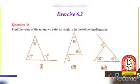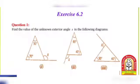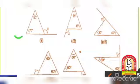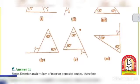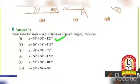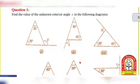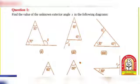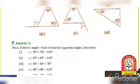Exercise 6.2: In Exercise 6.2, we have to find the value of exterior angle X in the following diagrams. Here in the first question, X is equal to 50 plus 70, because the exterior angle is equal to the sum of the two interior opposite angles. So X is equal to 50 plus 70, that is 120. In the next question, X is the exterior angle and these are the interior opposite angles, so 65 plus 45 gives X, which is 110.